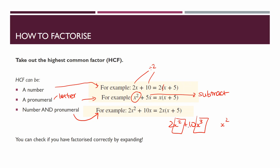You can check if you've factorized correctly by expanding — getting rid of the brackets. So if your answer is 2x(x + 5), you double-check by multiplying: 2x times x is 2x², plus 2x times 5 is 10x. That matches the original question 2x² + 10x, which confirms your factorization is correct. They must always come back to the same answer.